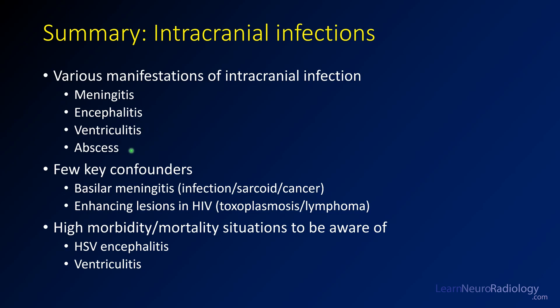Key features to keep in mind: basilar meningitis should prompt consideration of unusual infections like TB or fungus, sarcoidosis, or leptomeningeal cancer. Enhancing lesions in HIV patients have significant overlap between toxoplasmosis and lymphoma. High morbidity and mortality situations include HSV encephalitis with medial temporal involvement and ventriculitis — be quick to identify those. Thanks for tuning into this series on intracranial infections. Be sure to check out the rest of the videos on the channel.